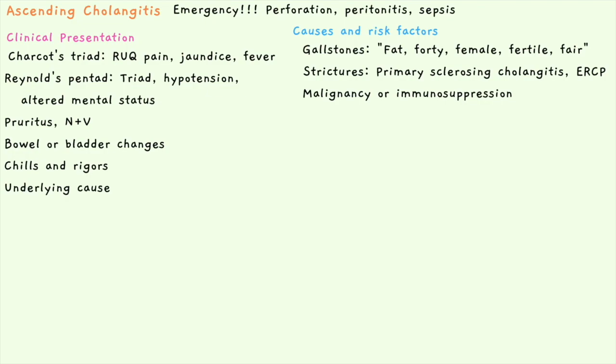Other causes of obstruction include strictures, which can be congenital or due to an insult such as autoimmune primary sclerosing cholangitis or a past ERCP. You can also consider malignancy such as cholangiocarcinoma, cancer of the gallbladder or biliary tract, or pancreatic cancer, as well as any causes of immunosuppression. These don't directly cause stasis but make it more likely the immune system won't handle infection, increasing the risk of perforation, peritonitis, and sepsis.